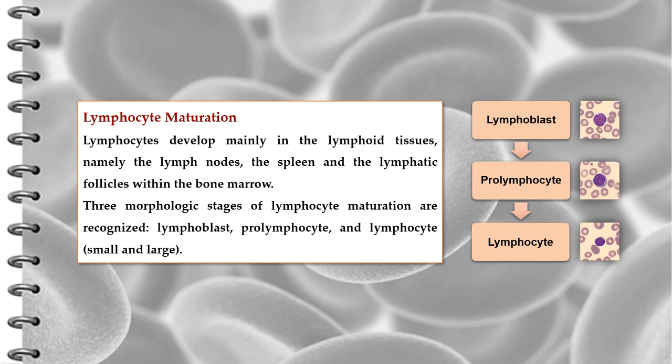Lymphocytes develop mainly in the lymphoid tissues, namely the lymph nodes, the spleen, and the lymphatic follicles within the bone marrow. Three morphologic stages of lymphocyte maturation are recognized: lymphoblast, prolymphocyte, and lymphocyte.